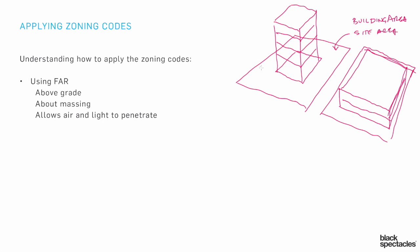The taller building still lets sunlight go by because there's a lot of space around it, so sunlight gets to the neighbors and air moves through. The other one is much wider with a bigger footprint, but because it's lower the sunlight goes right over the top. The ratio forces a trade-off: make it bigger and wider and it must be lower, or make it much taller and the footprint must be smaller. It's a way of controlling mass while still leaving flexibility for how people want to use their property.